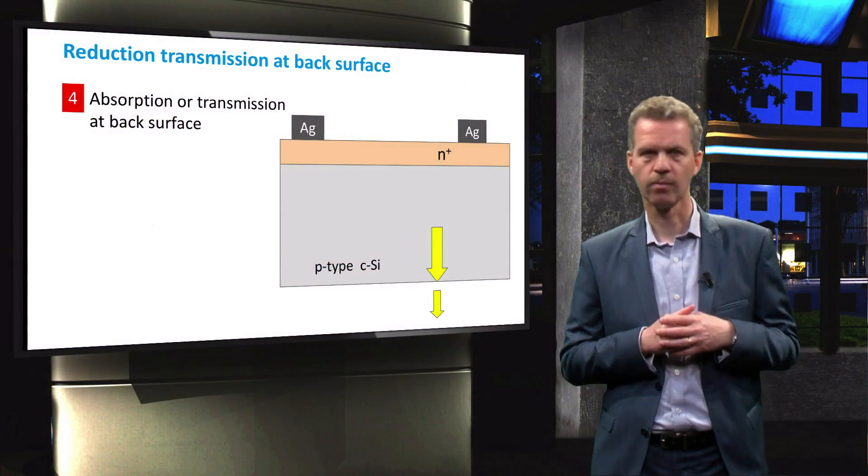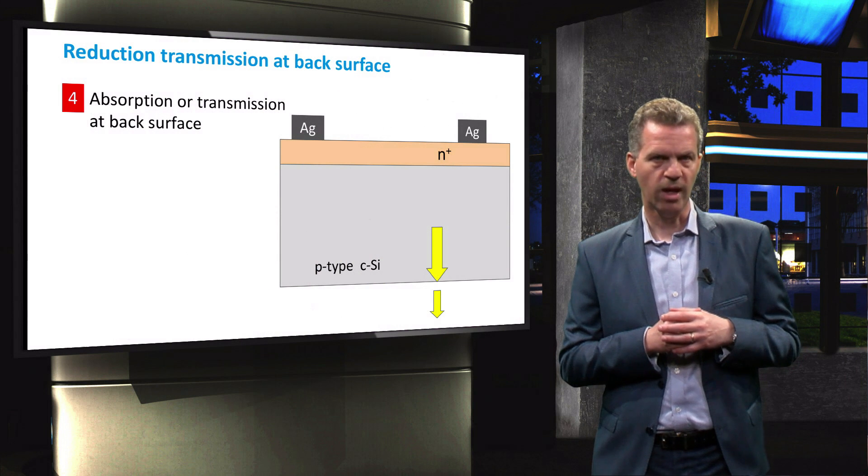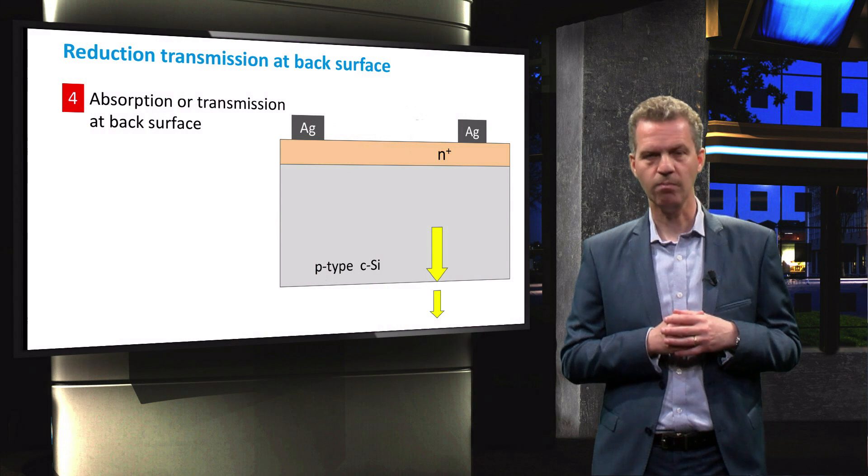We will now turn our focus towards the back of the solar cell where light can be transmitted or absorbed at the back surface. When light has not been absorbed in the silicon wafer after passing through the bulk, part of the light might escape at the back surface.